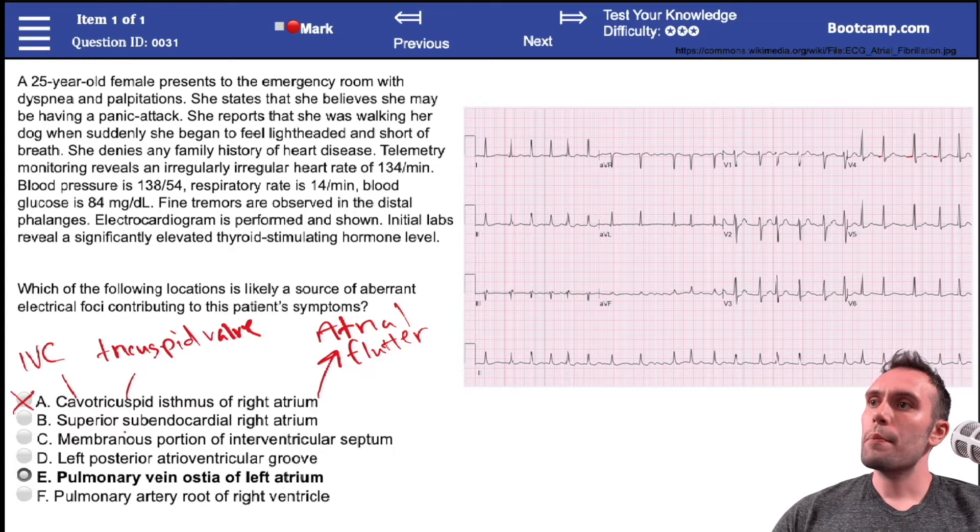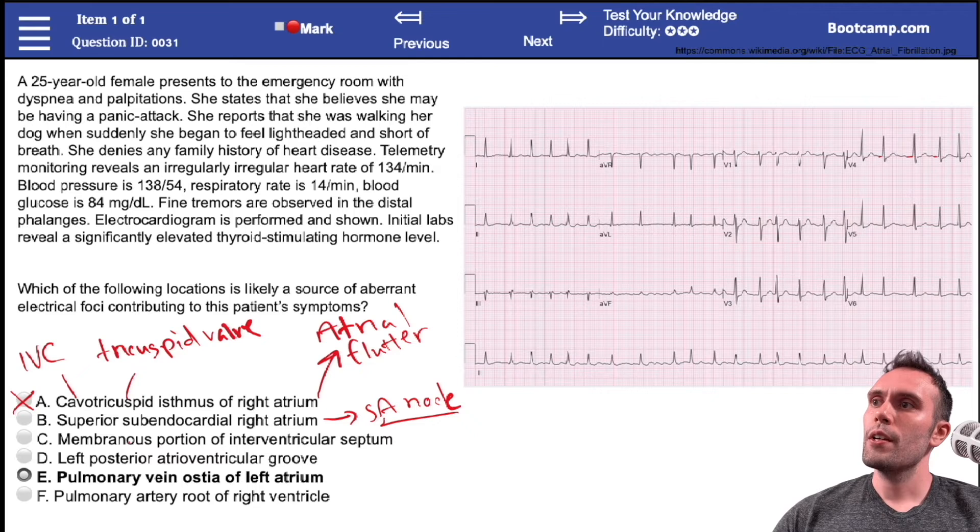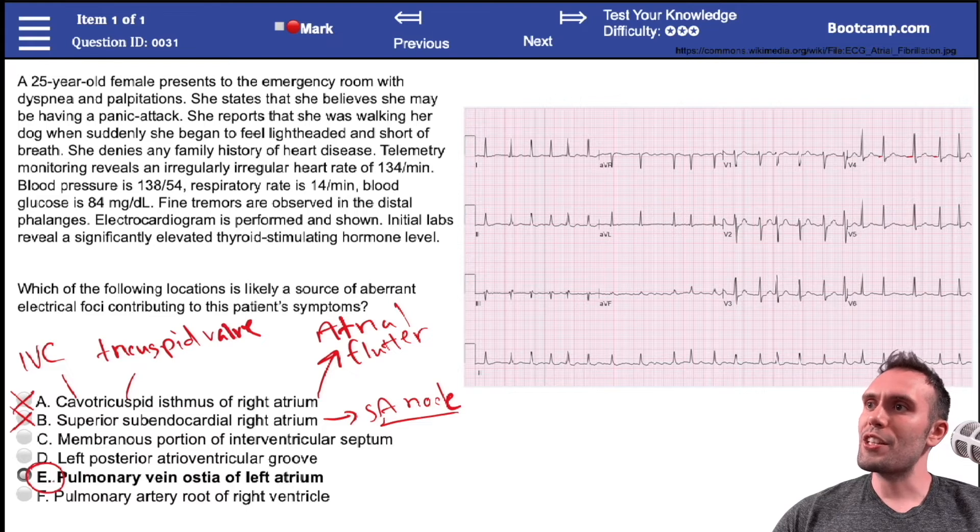Option B, superior subendocardial right atrium - this is going to be the location of the SA node. But we're not ablating the SA node, that's not the problem here. We want to get to the left atrium, the pulmonary vein ostia, which is E here. So we'll just skip to E.